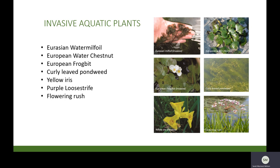Eurasian water milfoil is specifically problematic, as it forms very dense submerged stands that can make boating or recreational activities such as swimming very difficult, and is found in many local lakes. European water chestnut and European frogbit are floating species. European frogbit is also found locally, and recently RVCA has partnered with the Otter Lake Landowners Association in a removal project that has seen some positive results. Presently, European water chestnut is found in one portion of the Rideau Canal in Ottawa. Yellow iris, purple loosestrife, and flowering rush are all emerging species introduced as ornamentals and are very difficult to remove, as seeds can be easily spread during removal.